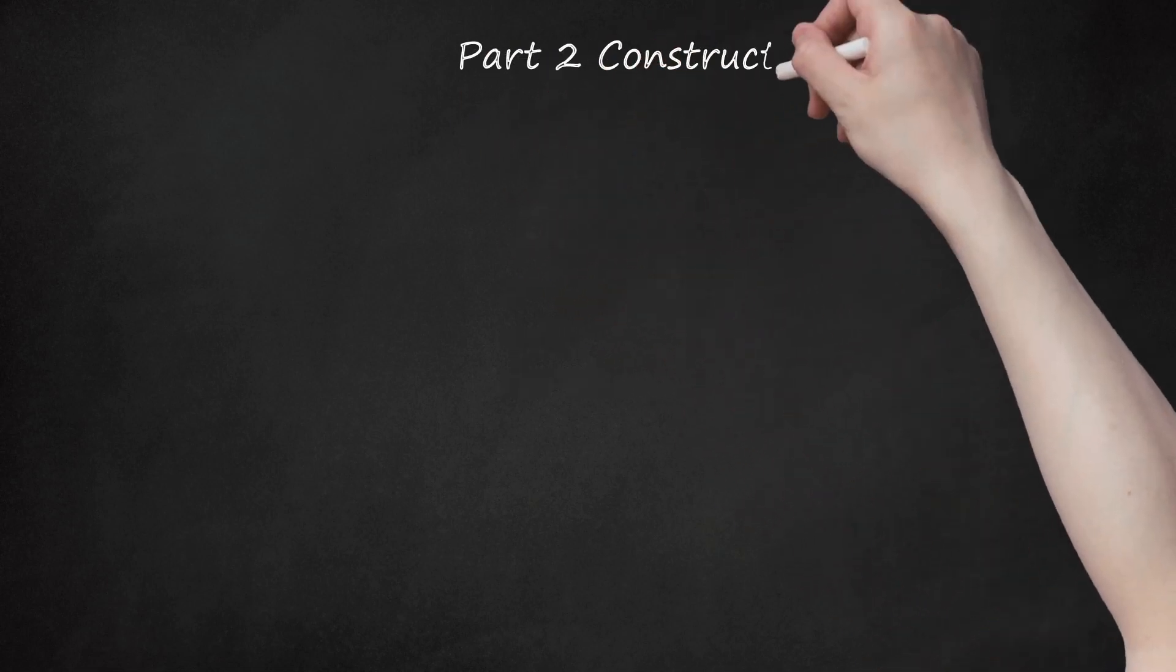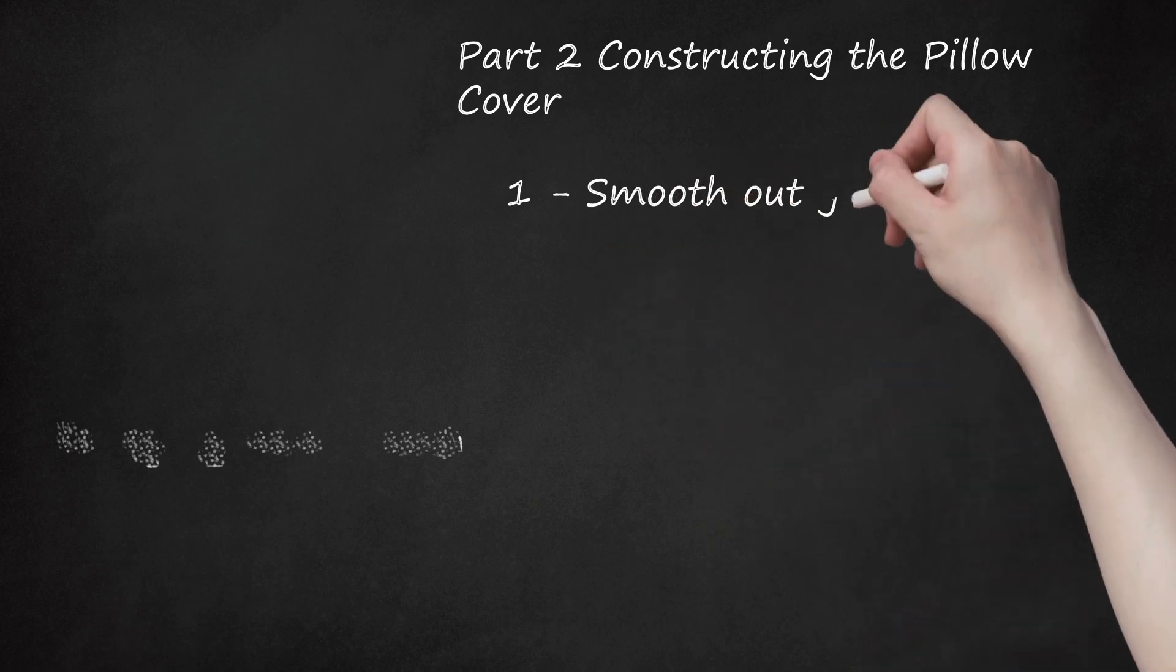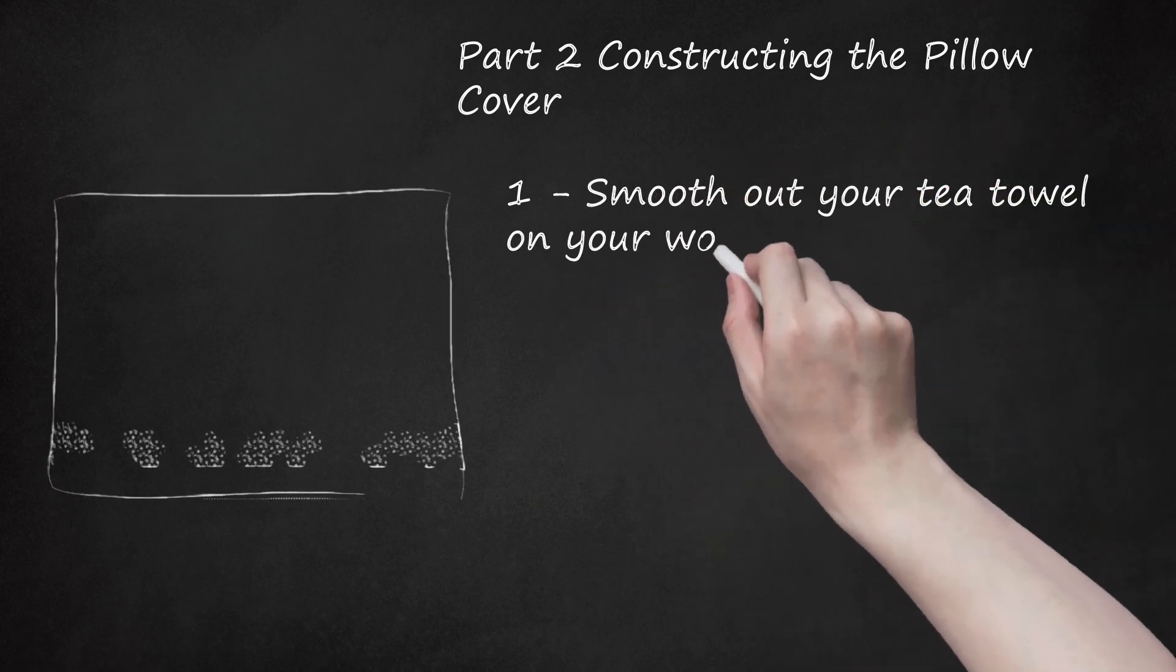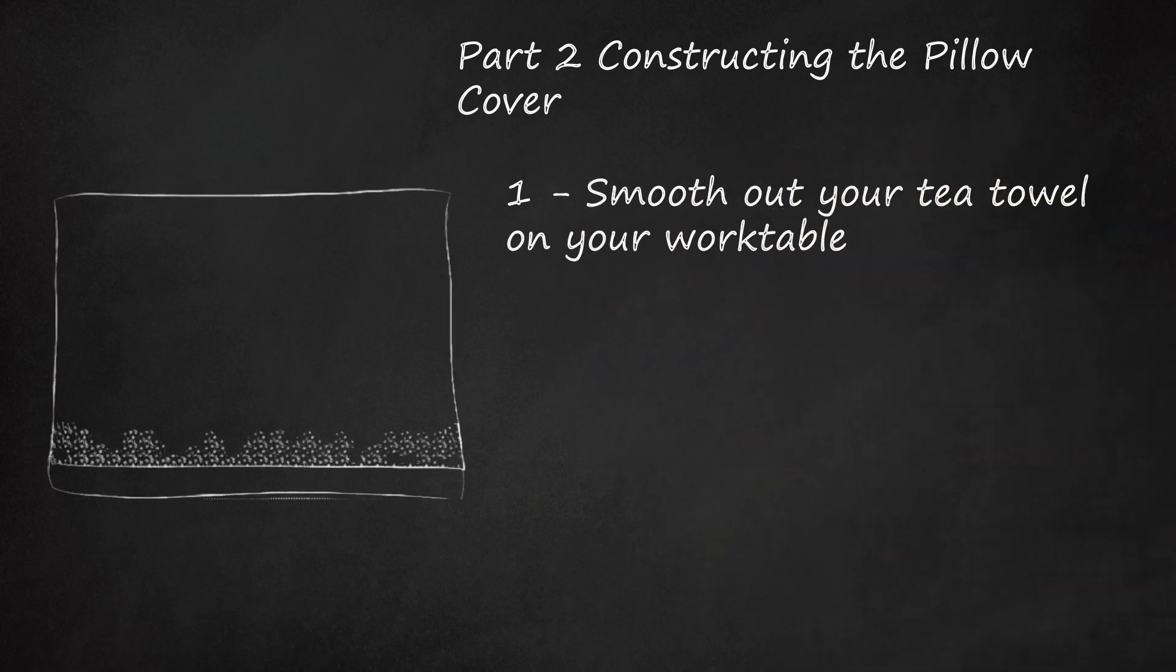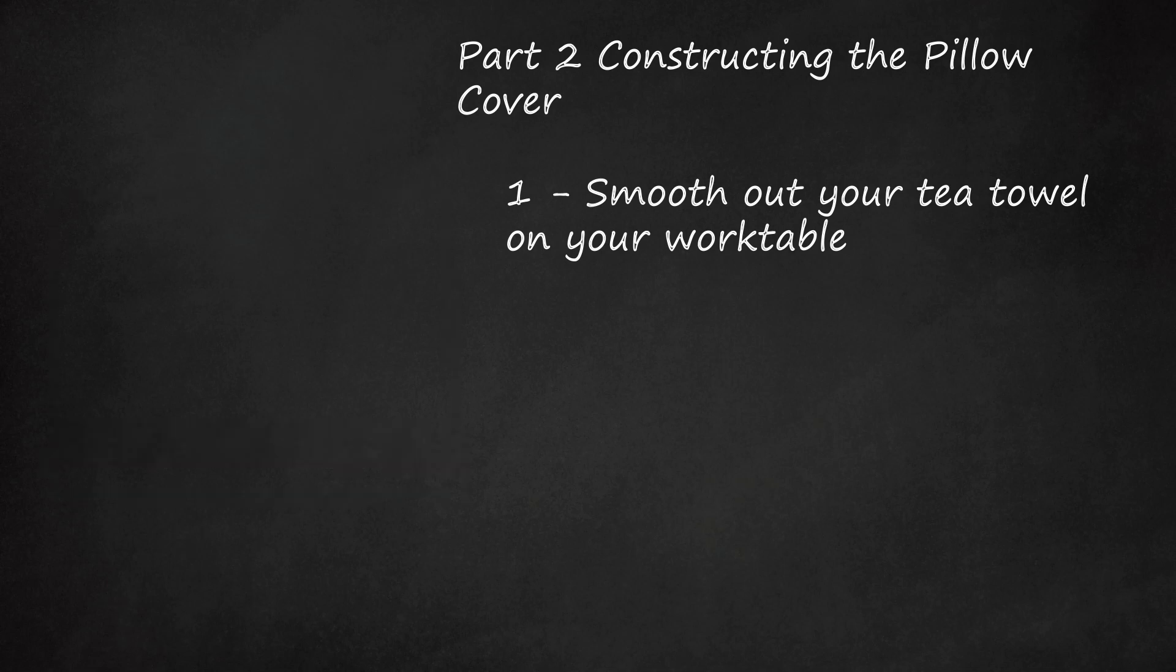Part 2: Constructing the Pillow Cover. Step 1: Smooth out your tea towel on your work table. Place the right side out. You can find the right side by looking at the seams. If you can see where the seams were folded, turn it over.